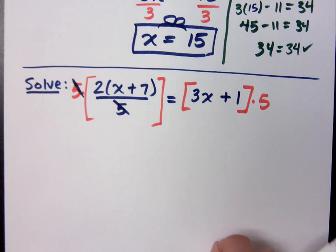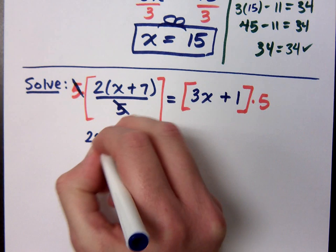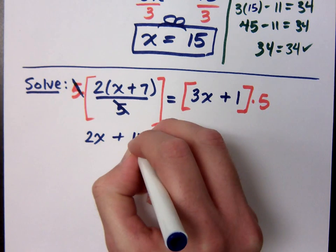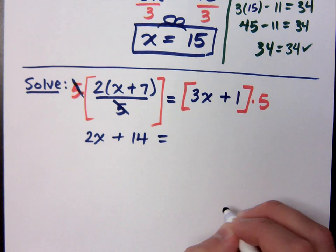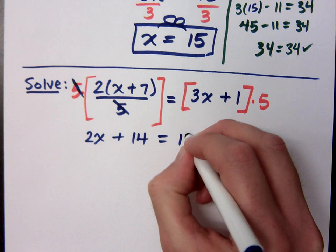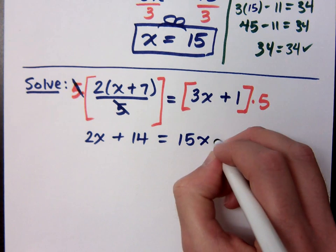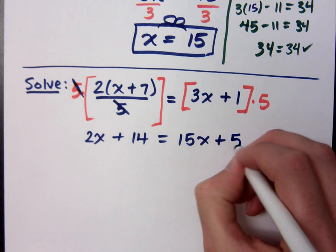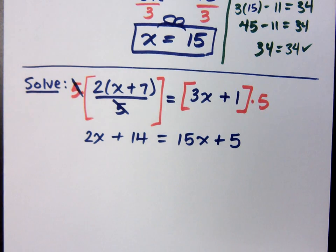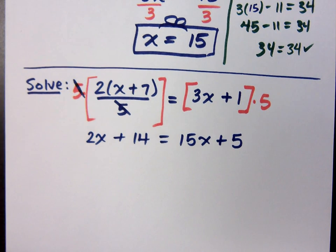So now what will you do in this equation? 2x plus 14 is equal to 15x plus 5. I'll get x's on both sides of the equation. What do I do now?